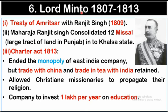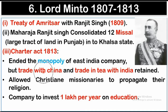The sixth Governor-General was Lord Minto, whose tenure was from 1807 to 1813. During his tenure, the Treaty of Amritsar was signed with Ranjit Singh in 1809. Maharaja Ranjit Singh had consolidated twelve Missls into the Khalsa State. Also during his tenure, the Charter Act of 1813 was passed, which ended the monopoly of the East India Company but retained trade with China and trade in tea with India. The Charter Act also allowed Christian missionaries to propagate their religion, and directed the Company to invest one lakh rupees per year on education.